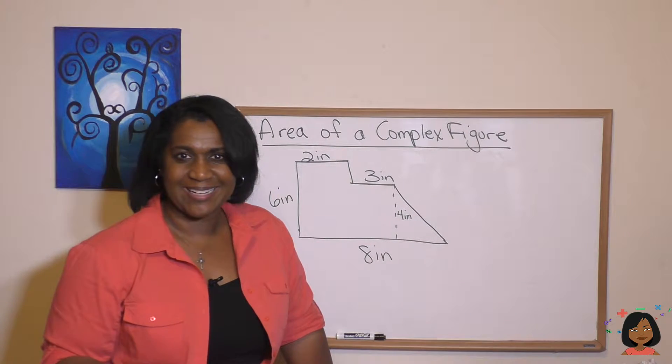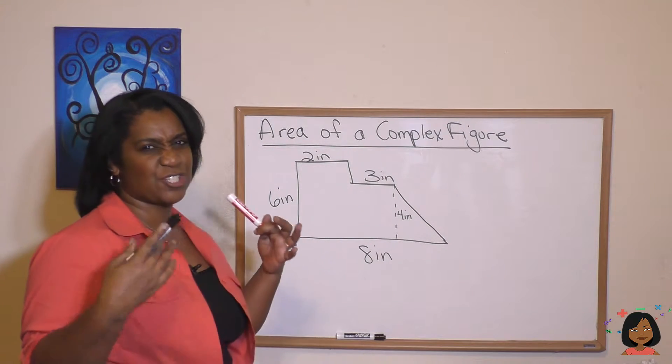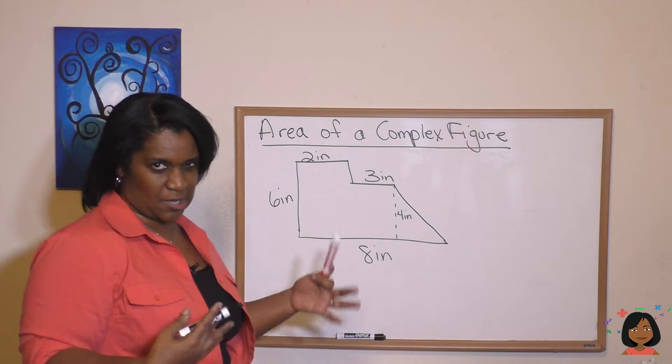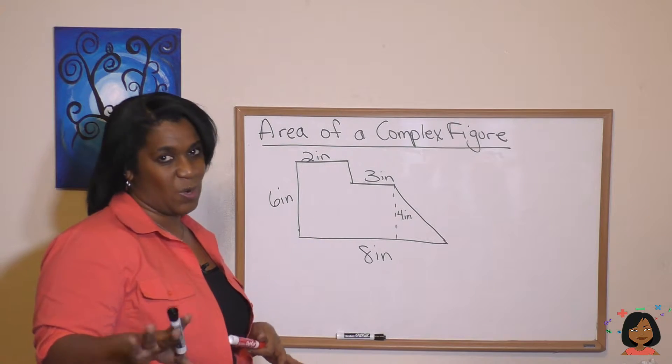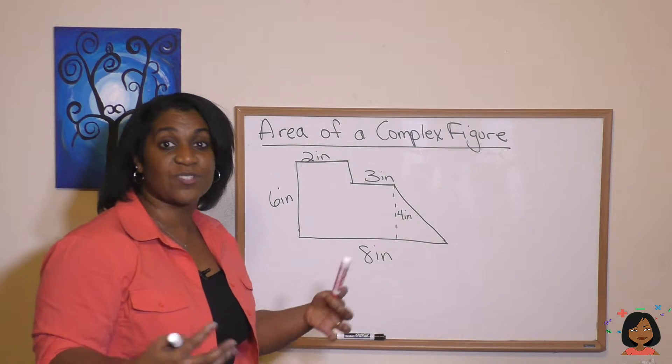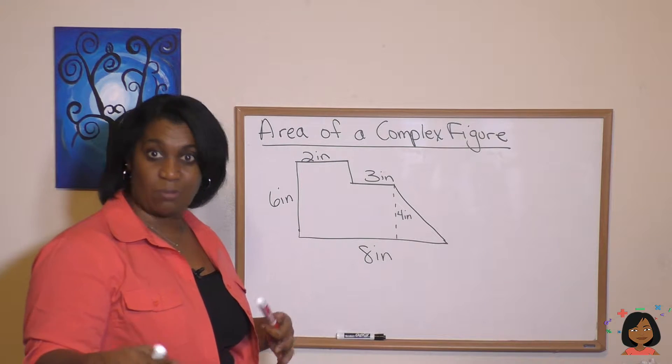What does that mean? A complex figure means that we've got something that's just not a straight up rectangle or straight up triangle, but it's got some kind of configuration going on. Don't worry. If you know how to break it down appropriately into smaller chunks, smaller pieces, then you can just do stuff that you know. Take a look.